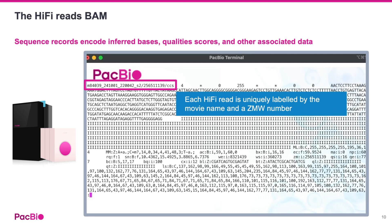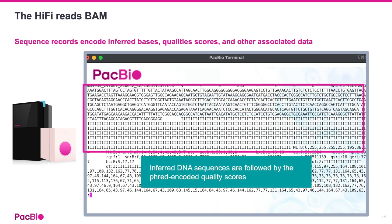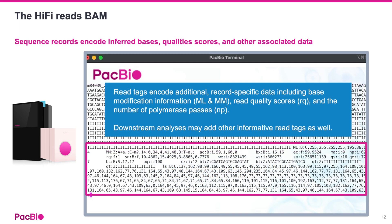The body of the HiFi reads BAM file contains sequence records. Each record is uniquely labeled by the collection movie identifier and a ZMW number separated by a slash. The inferred base sequences are provided as a string and are followed by their Phred-encoded quality scores. BAM tags also encode additional data for each record. For instance, base modification locations and probabilities are encoded in the ML and MM tags, while read quality scores and the number of polymerase passes are encoded by the RQ and NP tags, respectively. Some analysis workflows, like the ISO-seq workflow, may add or modify tags when relevant as well.